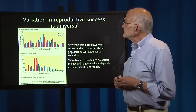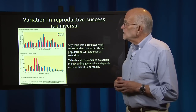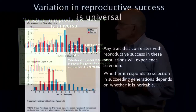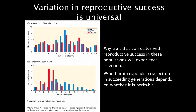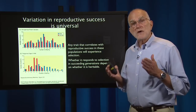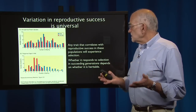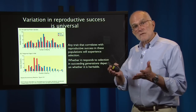Variation in reproductive success is universal. We have two examples here. On the top panel, we have the monogamous Pitcairn Islanders, and in the bottom panel, the polygynous Dogon in Mali. Males are in blue, females are in red. On the x-axis, we have the number of offspring a particular individual had. On the y-axis, the number of people who had that number of offspring. You can see that in both populations there's great variation in reproductive success. Any trait that correlates with reproductive success will experience selection, and whether it responds to selection depends on whether it is heritable.